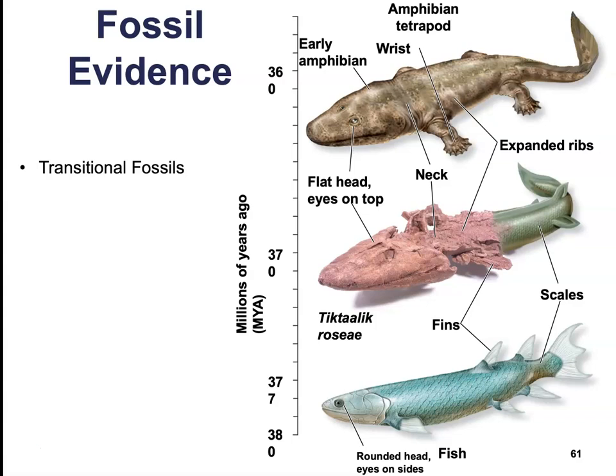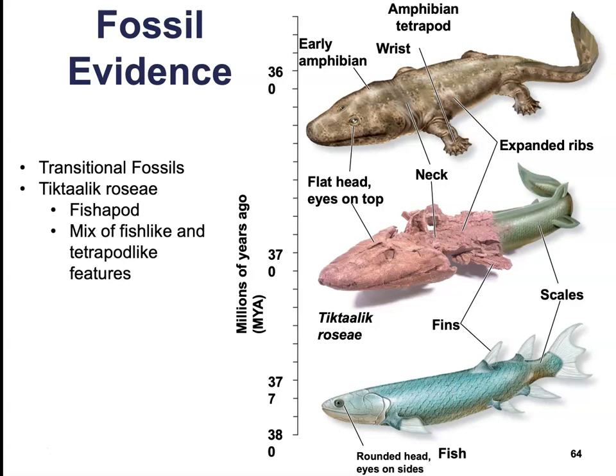Here's an example of a transitional fossil. In 2004, a team of paleontologists — scientists that study fossils — discovered fossilized remains of Tiktaalik roseae. They nicknamed it the 'fishapod' because it appears to be a transitional form between a fish and a four-legged animal, or tetrapod. The fossils are estimated to be around 375 million years old, from a time when the transition from fish to tetrapods is likely to have occurred.